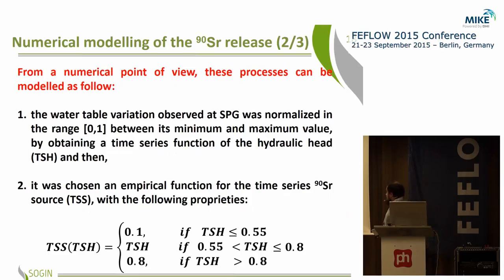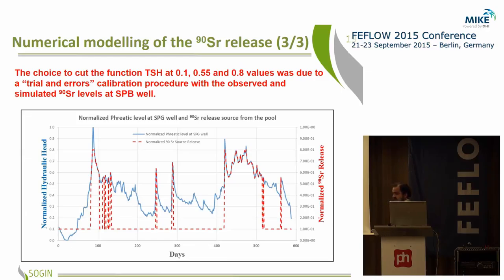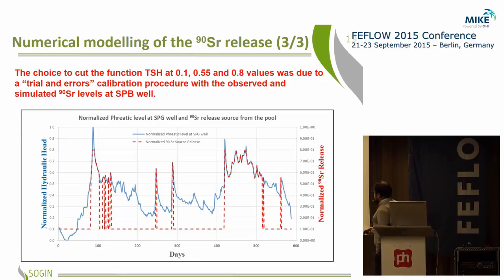The amount of Strontium-90 released increases with the level of the water table that floods the bottom of the pool building. From a numerical point of view, we introduced a function TSS that depends on TSH, the water table level, as an empirical function shown in this picture. The red dashed line represents the release of strontium: the horizontal portion is the continuous release, while the peaks represent the leaching process associated with water table rise in the pool foundation building. The continuous line represents the behavior of the water table, and both curves are normalized by their minimum and maximum values. This is a qualitative study.